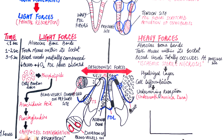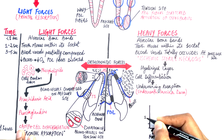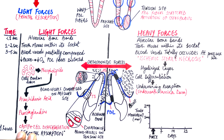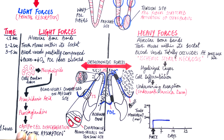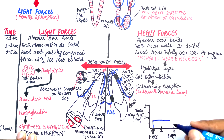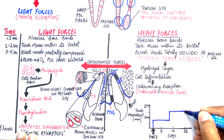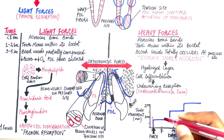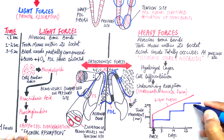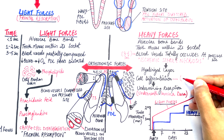The resorption of the alveolar bone with heavy forces takes time, hence the tooth doesn't move until the resorption is done. If seen through a graph, we can see that soon after the resorption is done, the tooth moves — or jumps — to a new position. The tooth doesn't move for a further few days until the next round of undermining resorption occurs. In comparison, with light forces, the movement of the tooth occurs in a slow, smooth, and continuous curve throughout the treatment time.